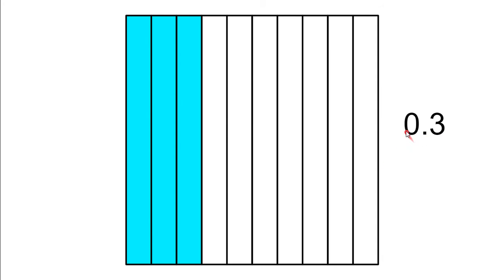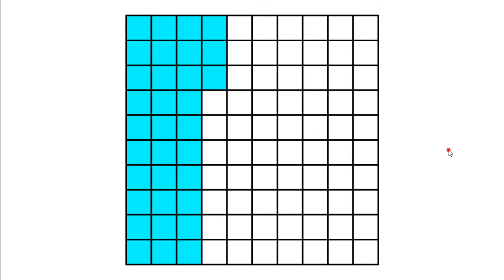Here, broken into 10 parts, three of them are shaded in. So that's three tenths. One decimal place, one digit after the decimal point. So zero and three tenths.